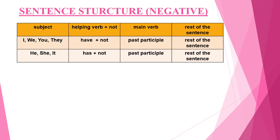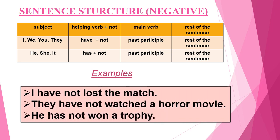With he, she, and it, we will use 'has' + 'not' + past participle, and then the rest of the sentence. Some examples are: 'I have not lost the match.' 'They have not watched a horror movie.' 'He has not won a trophy.'